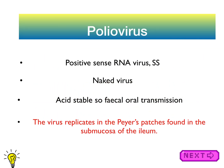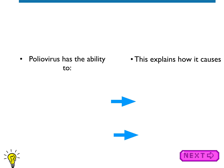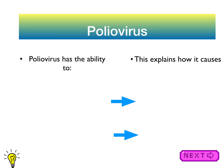What's special about poliovirus is that it replicates in the Peyer's patches, which are aggregates of lymphoid tissue found in the submucosa of the ileum. This ability to replicate there explains how it causes the symptoms — including, as in the title of the video, poliomyelitis.